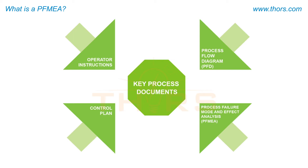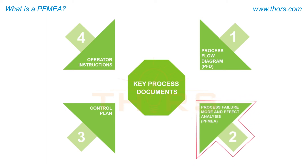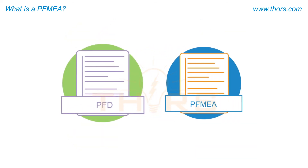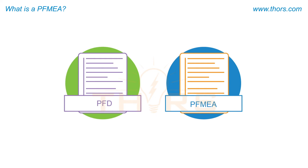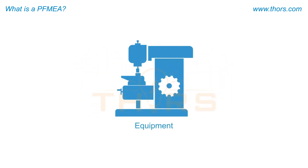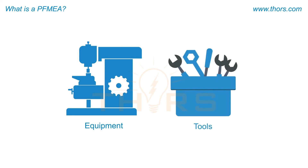These process documents are created in the order specified, where PFMEA is the second document created in the overall document hierarchy. In order to effectively use a PFMEA, both the PFD and the PFMEA must be developed before purchasing the required equipment and tools for a manufacturing process.